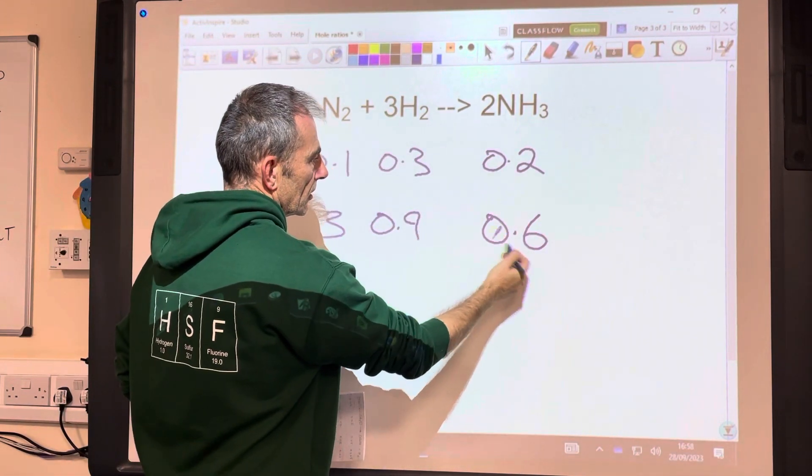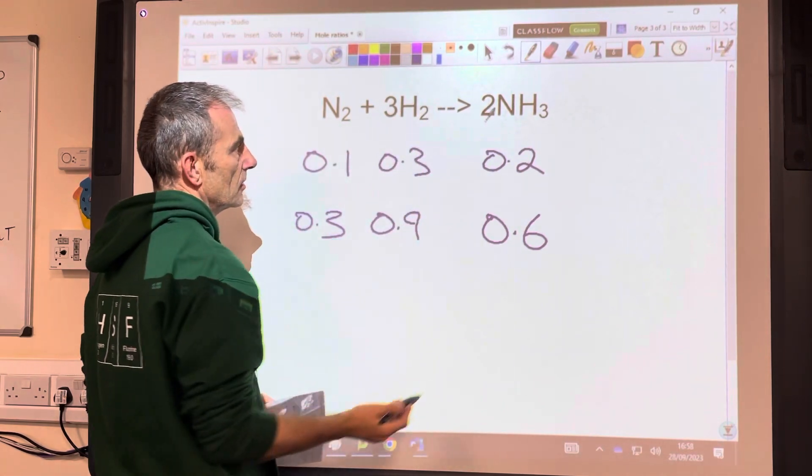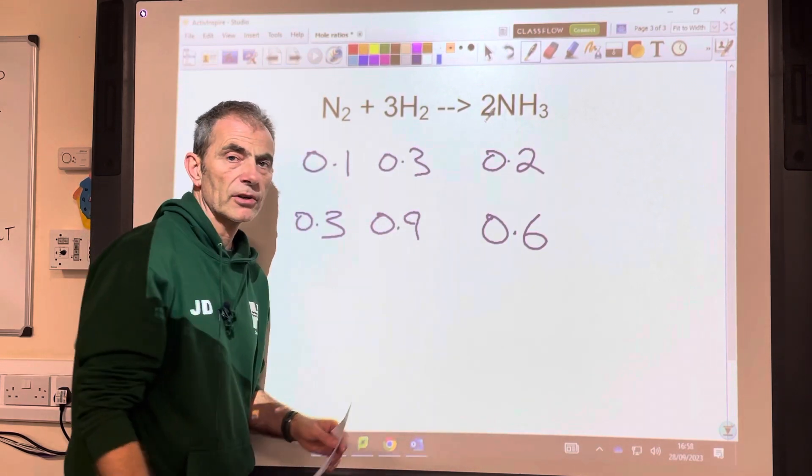Or we could have gone 0.6 is going to need 3 over 2 times, 1.5 times the moles of hydrogen, which gets you to 0.9.